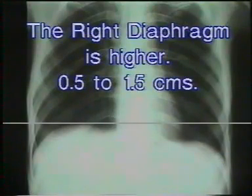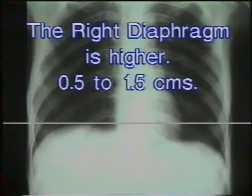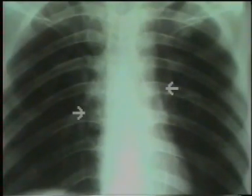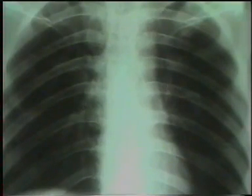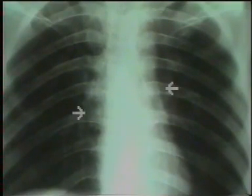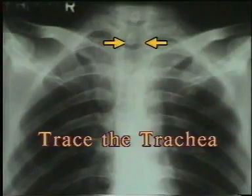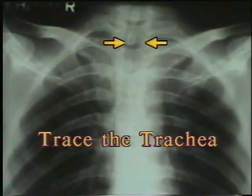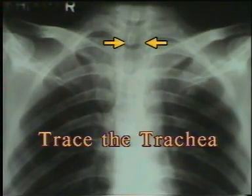The right diaphragm should be 0.5 to 1.5 centimeters higher than the left diaphragm and both should be smoothly curved. Then study the hila, represented by the shadows of the hilar vessels. The left hilum is normally at a slightly higher level than the right. Lastly, identify the course of the trachea up to the carina for any deviation. This completes the inspection of the lung fields.